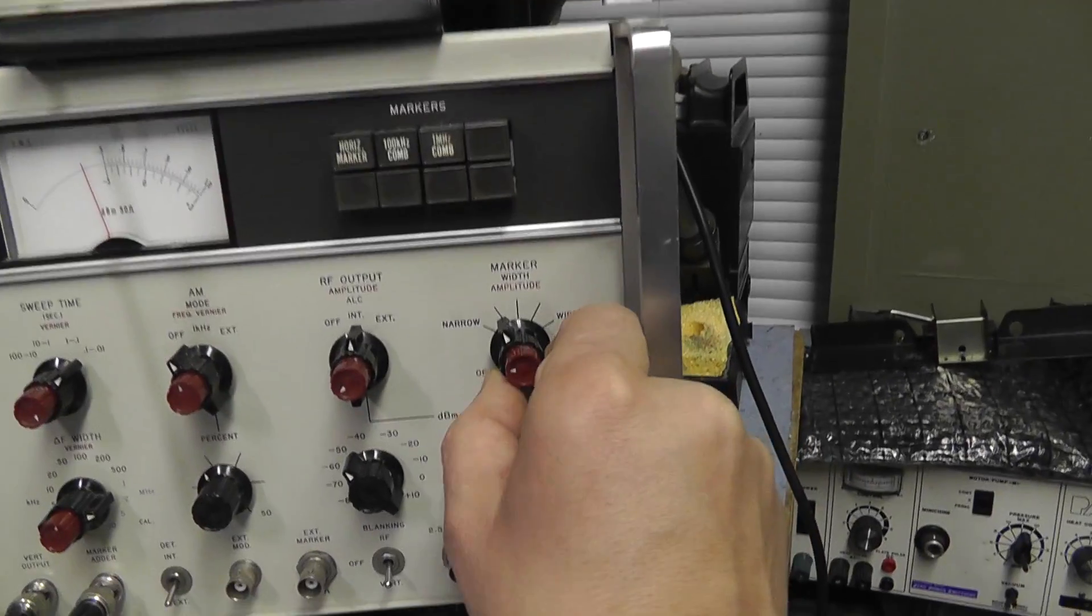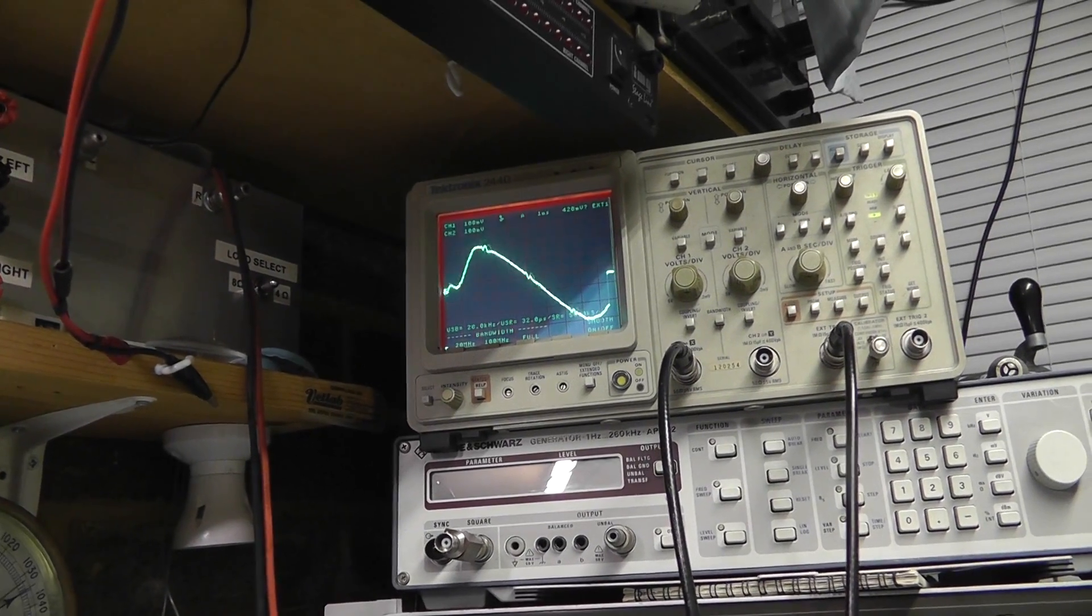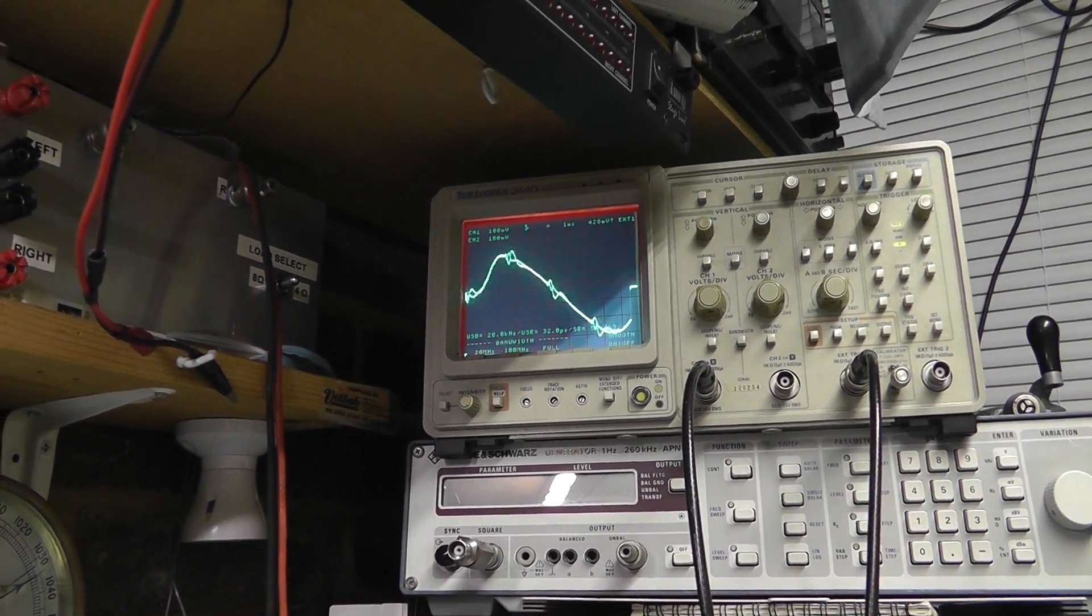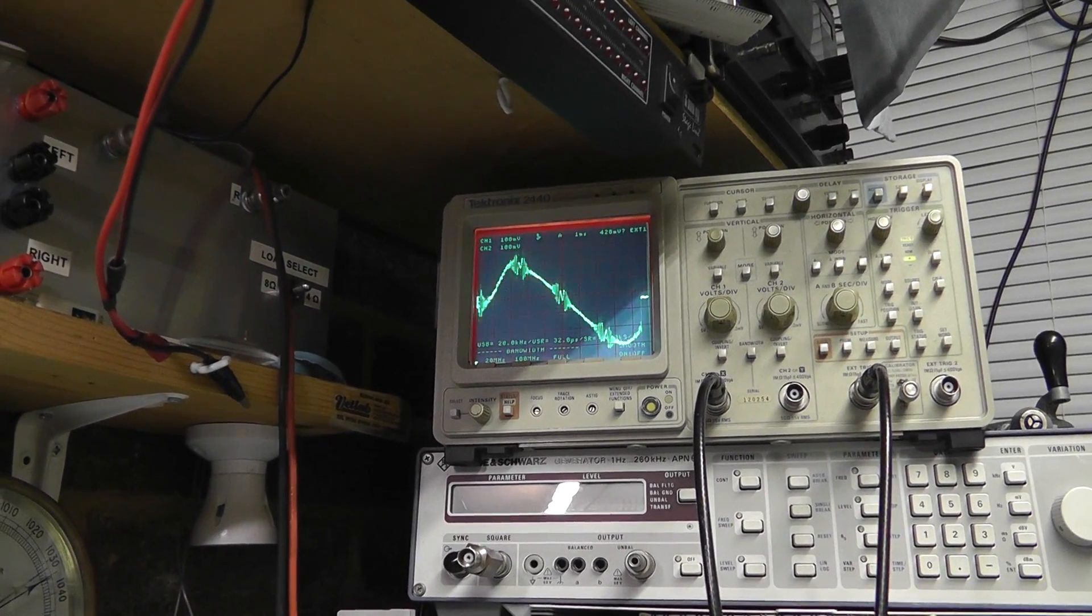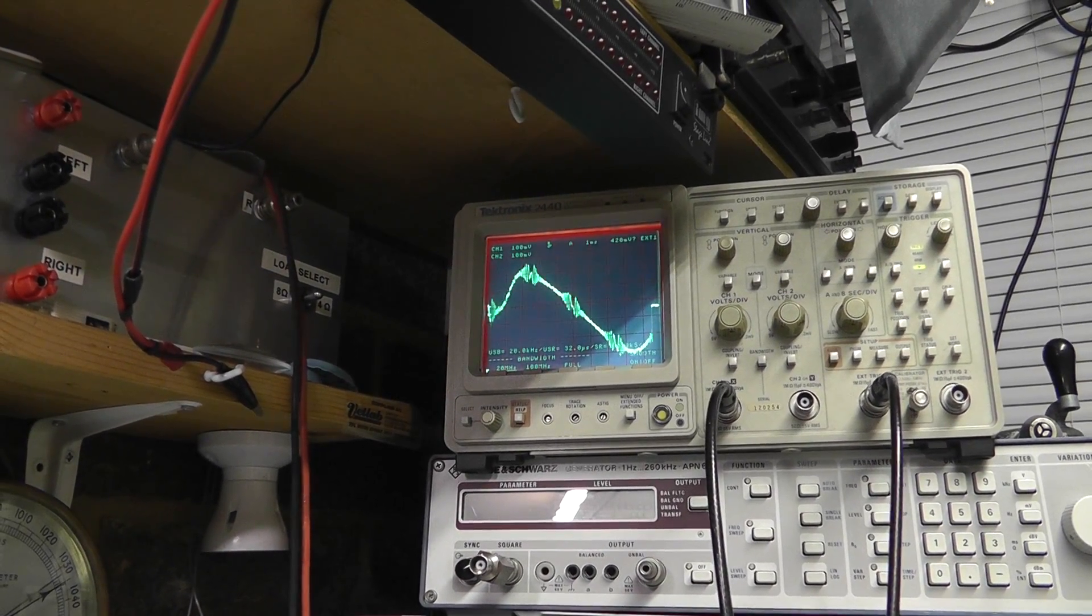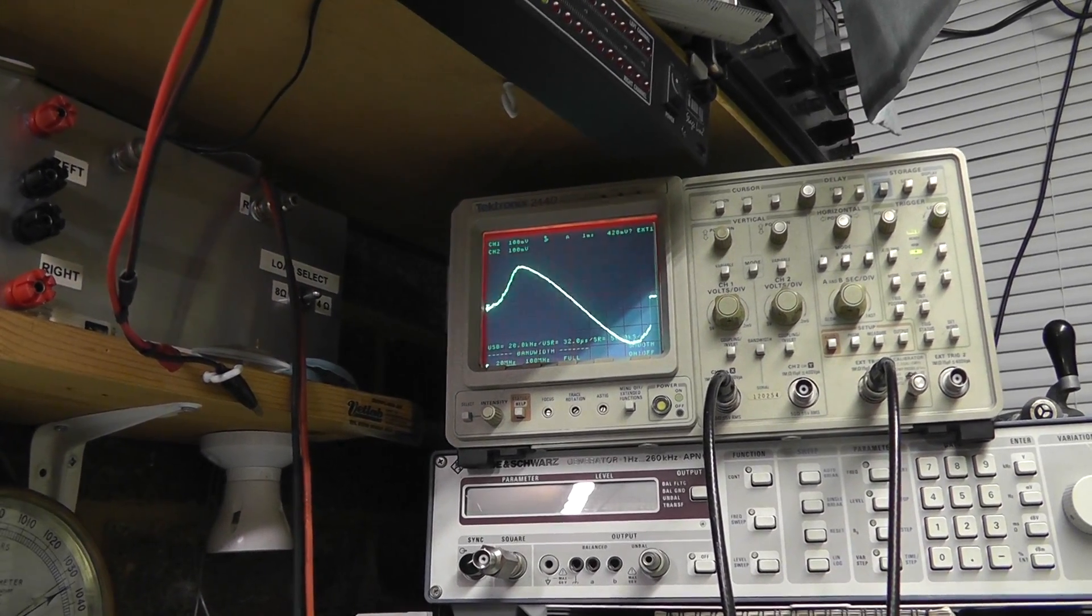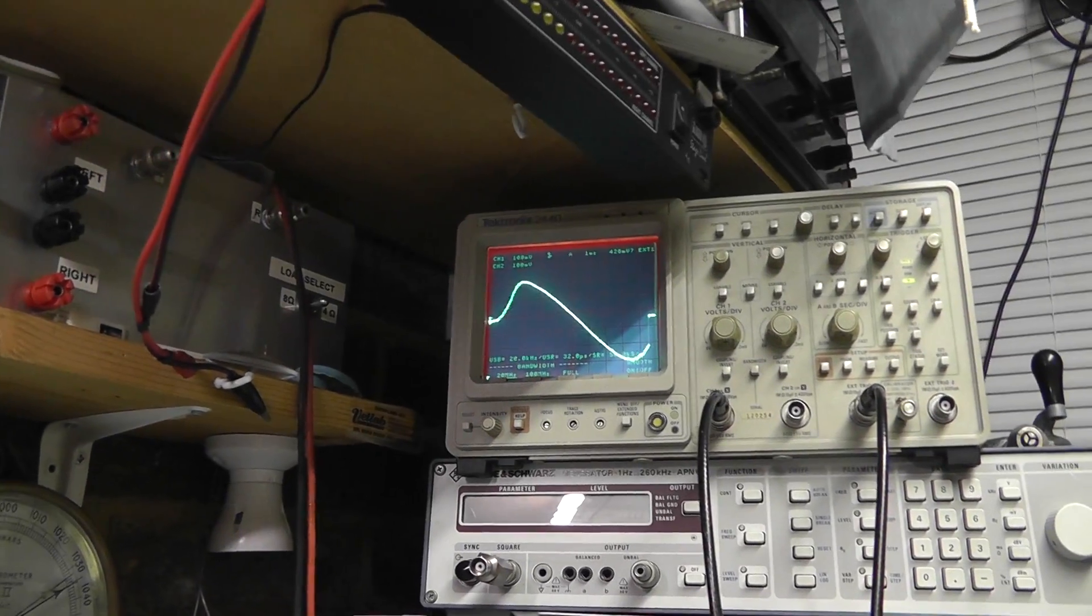And you can actually adjust the marker width with this switch here. But what it tends to do, if you go narrow, it tends to make them just sort of like a bit wobbly and not very clear. As you can see there, they're probably about the best markers you'll get. We don't need the marker generator on all the time. All we need to do is try and get the waveform as uniform as possible.